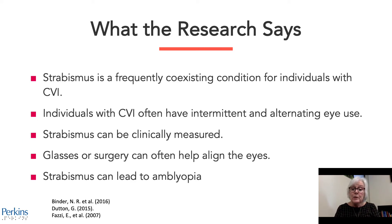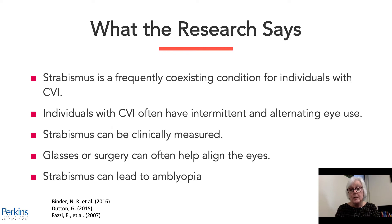What the research tells us is that strabismus is a frequently coexisting condition for individuals with CVI. Individuals with CVI often have this intermittent or alternating eye use, and strabismus is able to be clinically measured. Glasses or surgery can often help with eye alignment. If strabismus is not treated, that can lead to amblyopia, where the weaker eye actually shuts down the visual information.